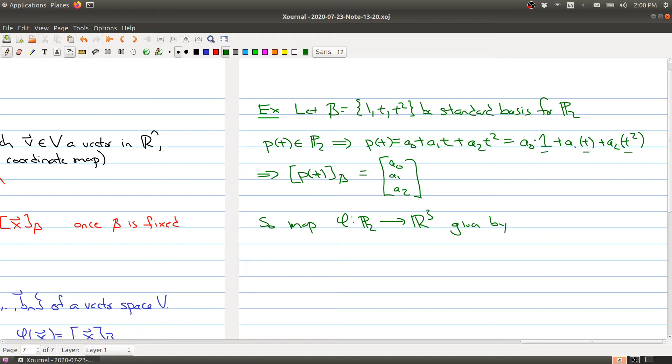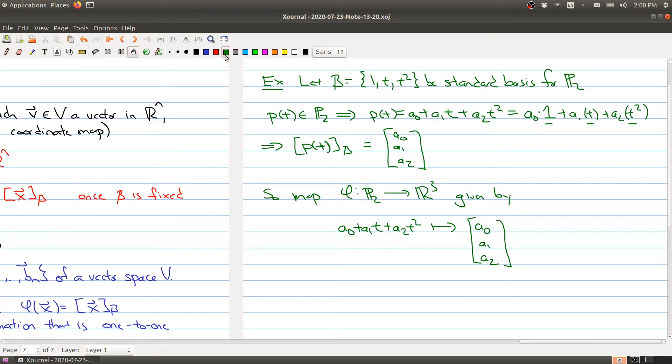It's simply the coefficient of the polynomial. So the map that we have, the coordinate map, is given by taking any polynomial and mapping it to the coordinate a0, a1, a2. And not only do you have a coordinate map, this is an isomorphism.